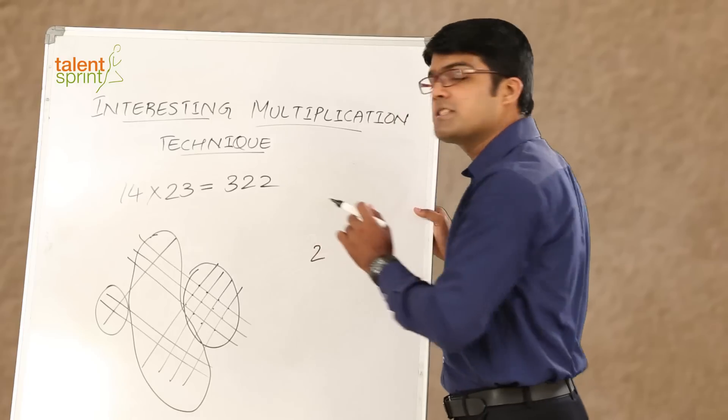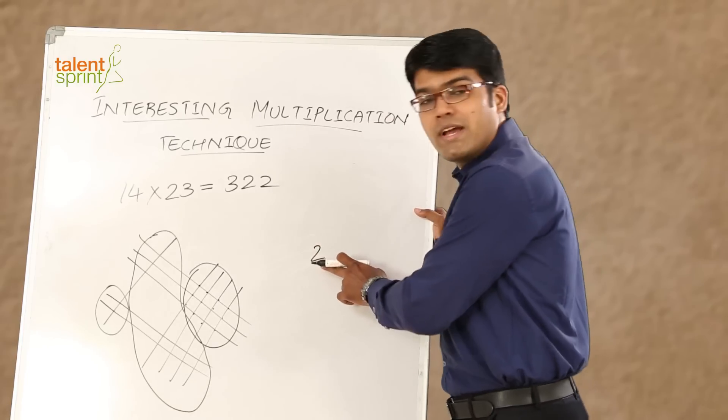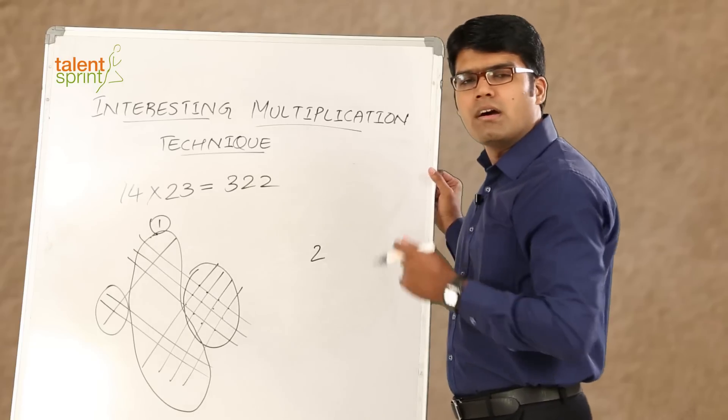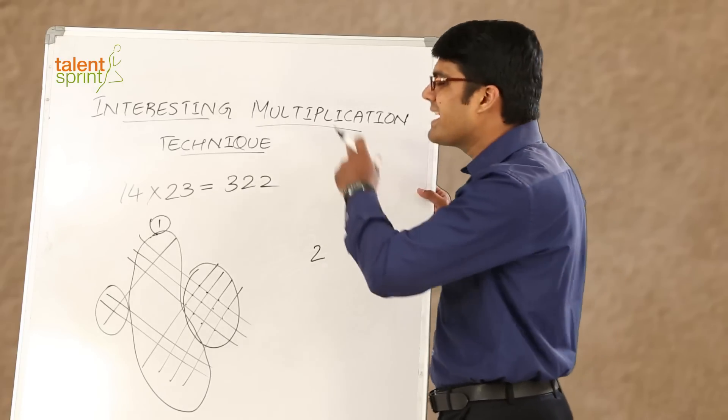But can we take 12 in the unit place? No. What do we do? Take 2 as the answer and 1 gets carried forward like what we generally do in any form of multiplication, right. So 1 gets carried forward to the next place and 2 comes in the result.